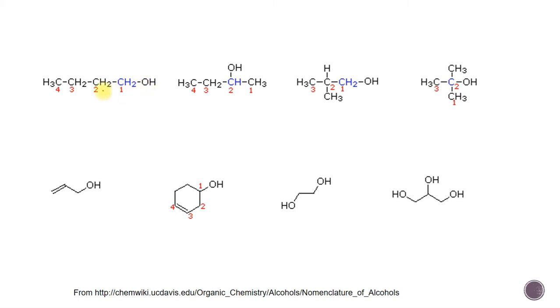Here's an example. If we number from the right to the left in this problem, then the OH group would be at the one position. So that's good, rather than the four position. As usual, we want to minimize the numbers. And this is a four-carbon thing, so we're going to call it butane. But we take off the E and put an OL, so butanol.